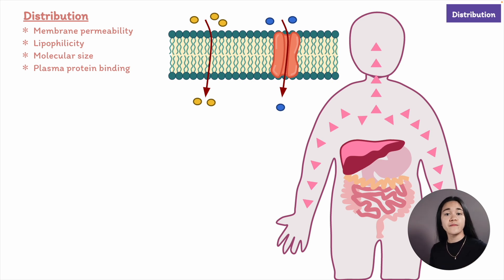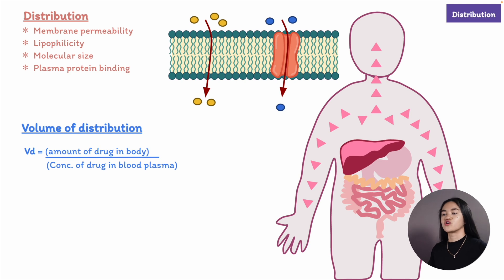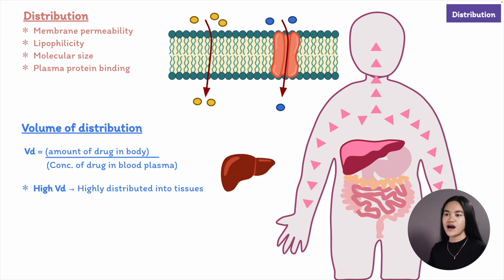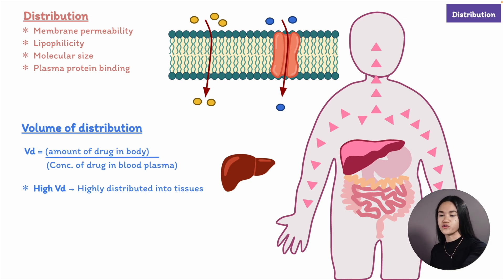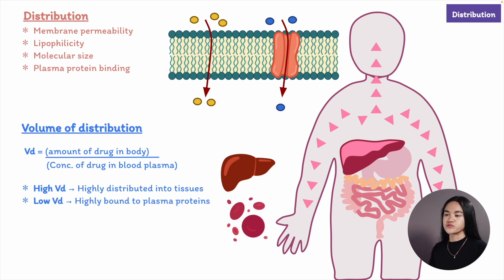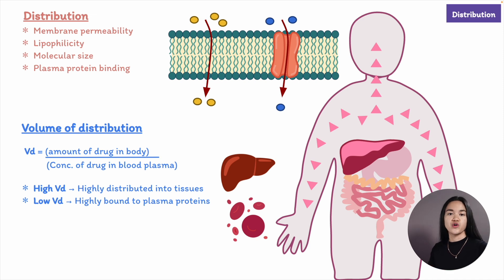This leads us to volume of distribution (Vd), which relates the amount of drug in the body to its concentration in the blood or plasma — essentially, where in the body is the drug accumulating. Drugs with high volumes of distribution are highly distributed into tissues; smaller, lipophilic molecules achieve a larger volume of distribution. Drugs with low volumes of distribution are highly bound to plasma proteins, so there's less distribution to other tissues. This is useful in estimating the required dose.